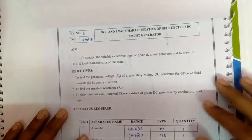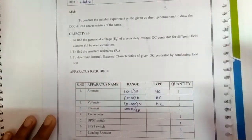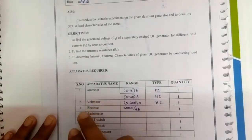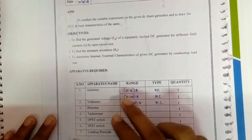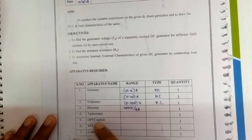So the apparatus required will be ammeter, voltmeter, rheostat in the corresponding range, tachometer, DPSC switch, SPSC switch, and loading rheostat.